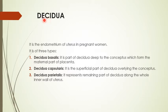Today's topic is the decidua. The decidua is basically the false bed which is prepared under the progesterone level, and it is composed of three layers: the basal layer which is along the myometrium, the spongy layer in which the blastocyst beds, and the innermost compact layer.